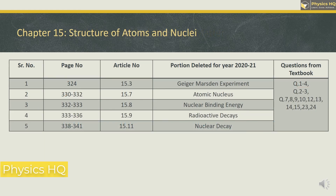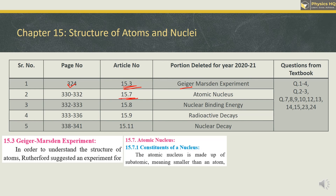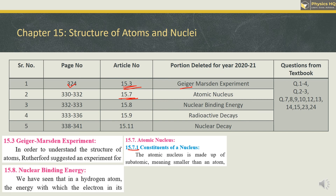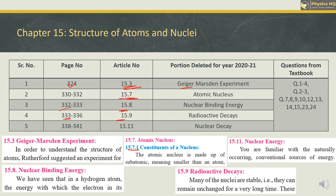For Structure of Atoms and Nuclei, on page 324, section 15.3 on page 330 — the atomic nucleus topic — is deleted. Sections 15.7.1 and 15.7.2 you don't have to do. Section 15.8 — nuclear binding — on page 332 is deleted. Radioactive decays, section 15.9 on page 333, and nuclear energy on page 338 are also deleted. The deleted MCQ is number 4 and question 2 brief answer can be skipped along with several other questions.